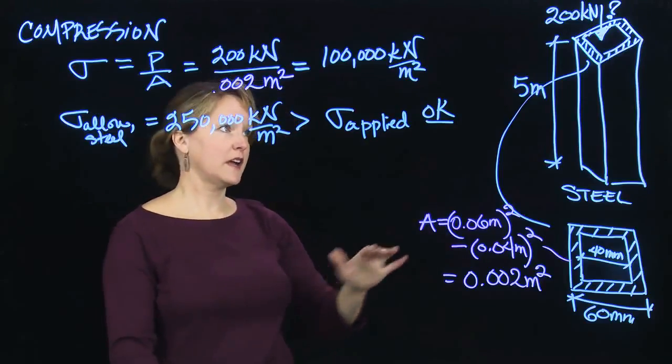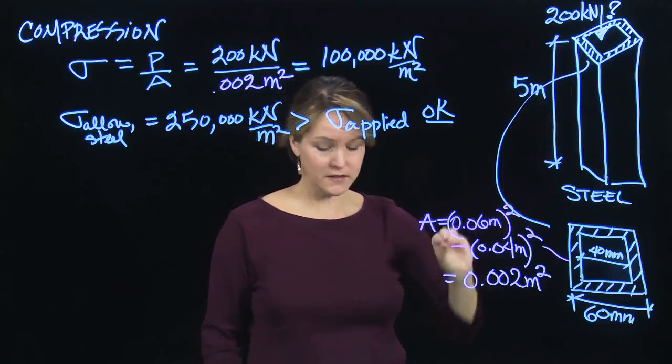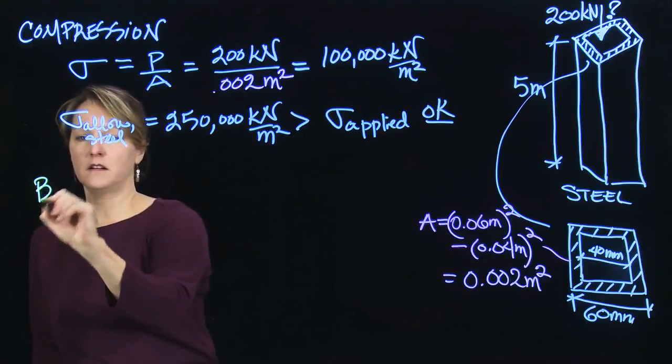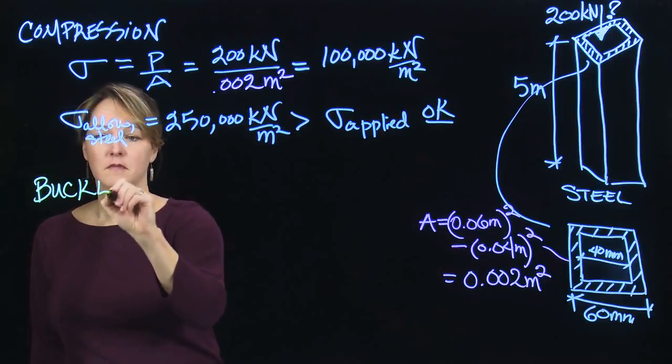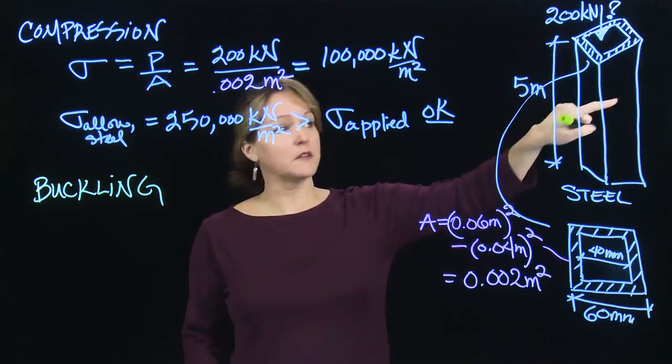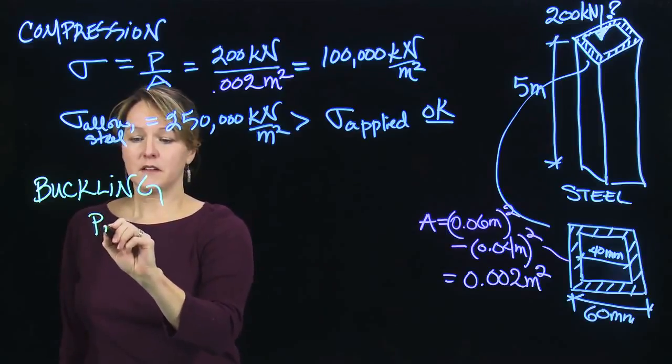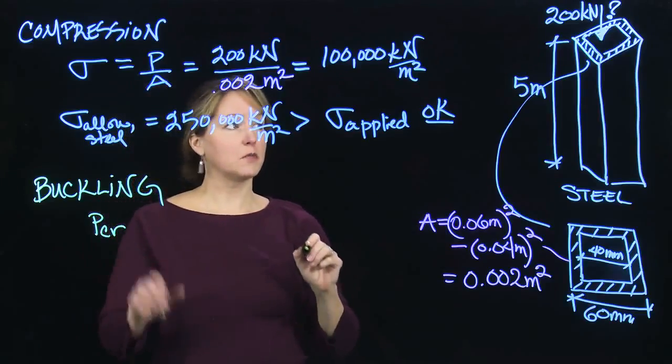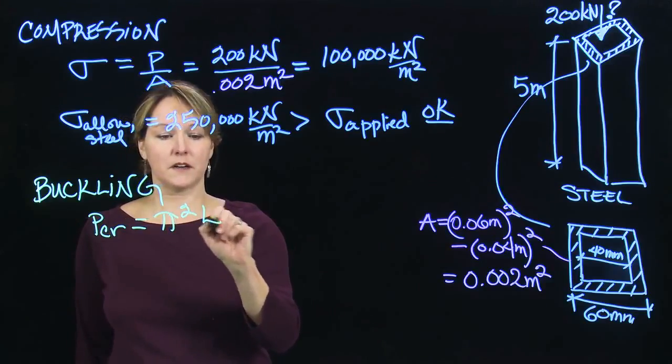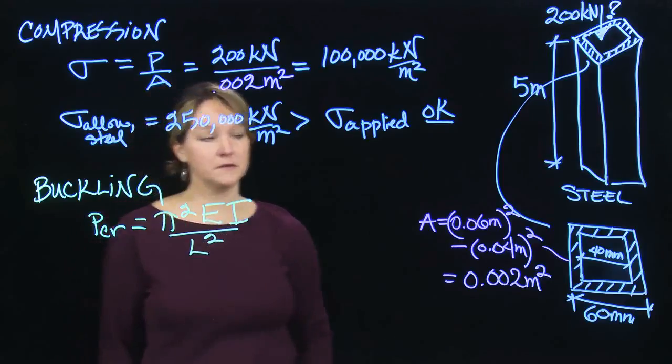So I expect my column to be okay if I'm considering compression. So that's the first thing I want to look at. So this column will not fail by compression. It will not yield, and that's good news. But now let's also look at buckling, the other mode of failure that's possible. So that mode would be that I push down on the column, it would start moving laterally. So if I want to figure out if it's going to buckle, I need to calculate what's called a critical buckling load, and that equals pi squared EI over L squared.